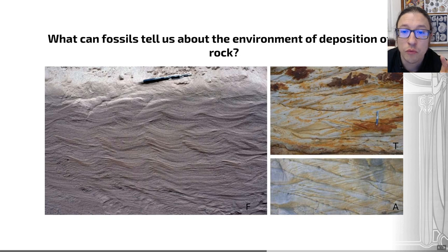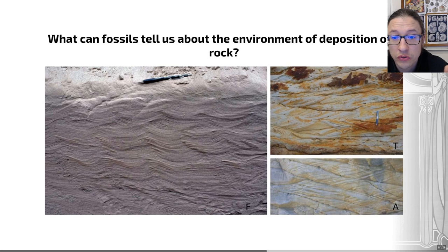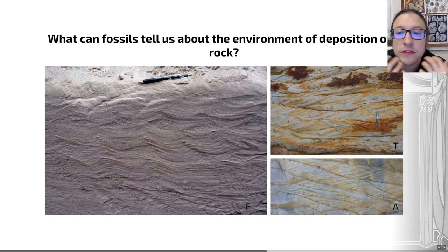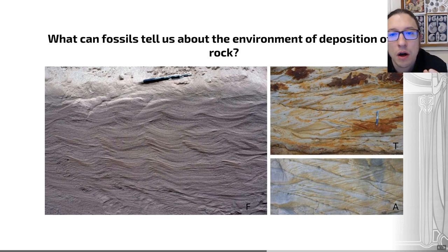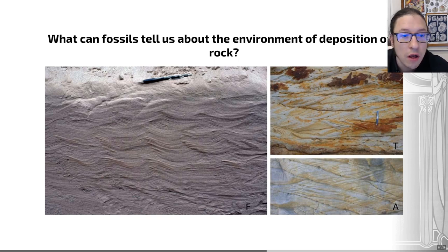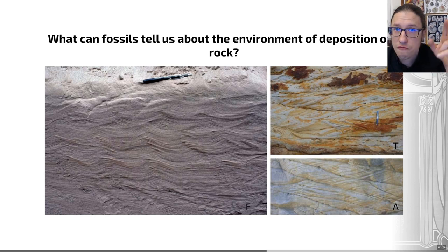So whilst these three rocks look very similar in their sedimentary structures, we can identify one as fluvial, one as tidal, and one as aeolian. Putting much of what we've learned together, this allows professional geologists to use fossils not only to tell us about depth of deposition, but also the firmness of substrate, rates of sedimentation, paleolatitude, and paleoclimate. By applying this to multiple rocks we can build up a picture of continental interiors versus marine ecosystems in the past and use that to understand the history of life and the history of Earth.